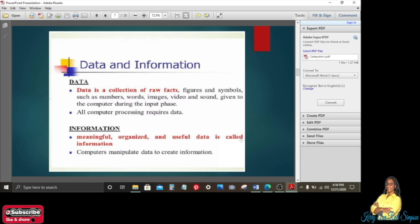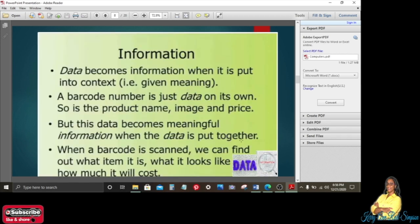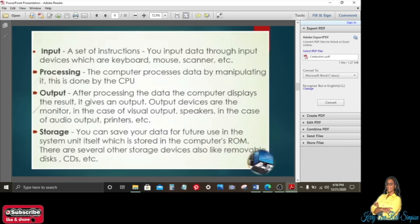But when it becomes processed, when the data is processed, it becomes information which is then meaningful, organized, and useful data. So computers manipulate data to create information, and that is very important to know. Data becomes information when it is put into context, that is, given meaning. A barcode number is just data on its own, so is the product name, image, and price. But this data becomes meaningful information when the data is put together. When a barcode is scanned, we can find out what item it is, what it looks like, and how much it will cost.